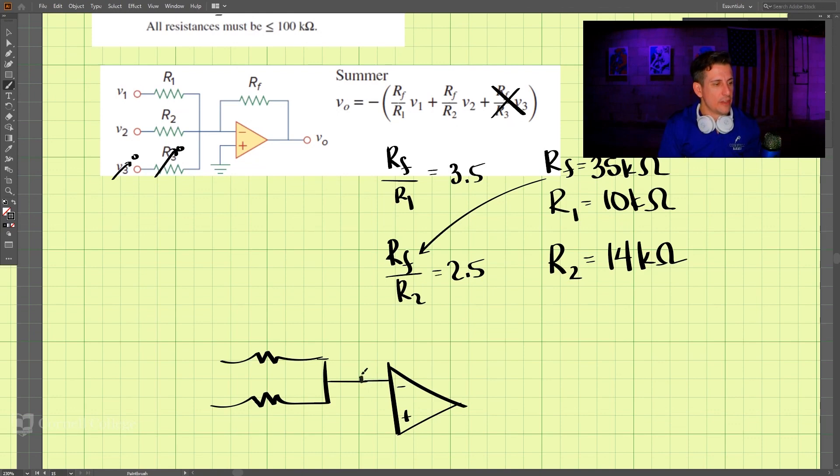And then we have the feedback resistor here, and then that gives us v_out over here, which is equal to 3.5*v1 - 2.5*v2.